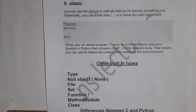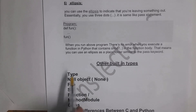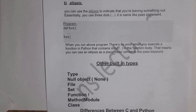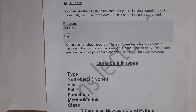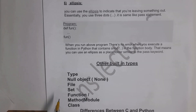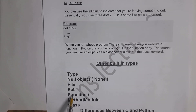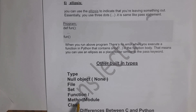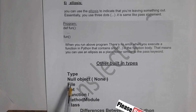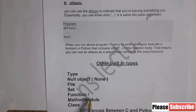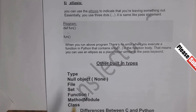There are other built-in types in Python: using type() we can find the data type; None is the null object representing nothing. I have already explained sets, functions, and methods. Files and modules will be explained in Unit 2.